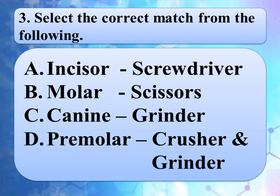Our next question is: select the correct match from the following. Option A: incisors, screwdriver. Option B: molar, scissors. Option C: canine, grinder. Option D: premolar, crusher and grinder. The correct answer is option D, premolar — crusher and grinder.